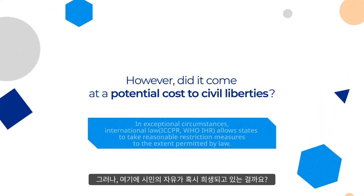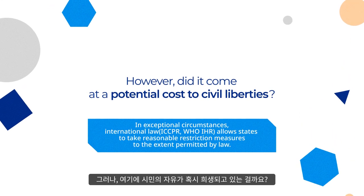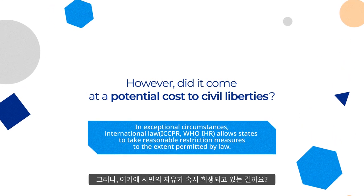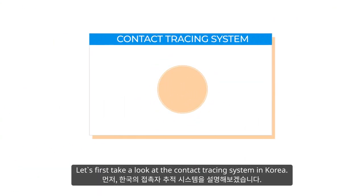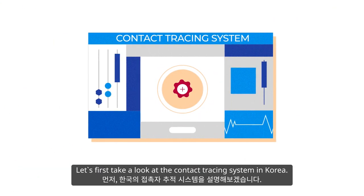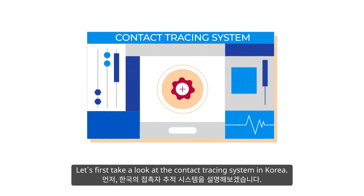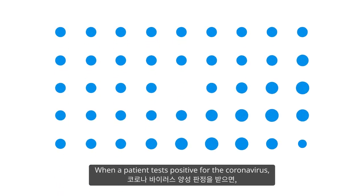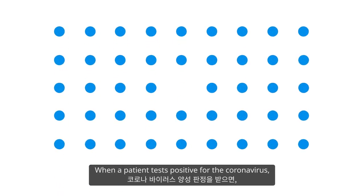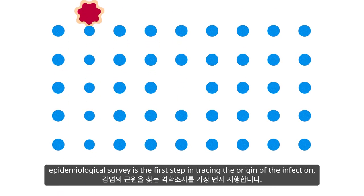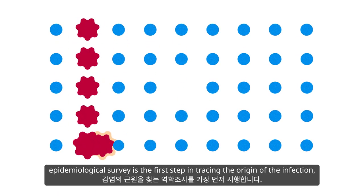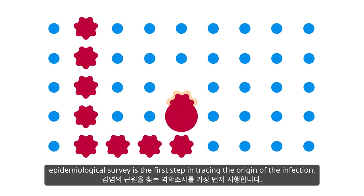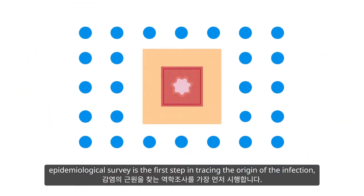However, did it come at a potential cost to civil liberties? Let's first take a look at the contact tracing system in Korea. When a patient tests positive for the coronavirus, an epidemiological survey is the first step in tracing the origin of the infection.